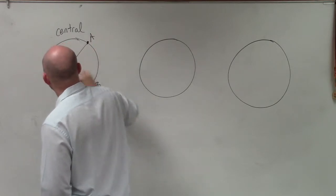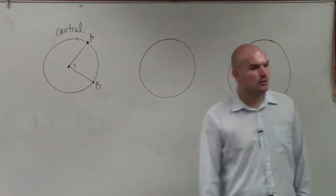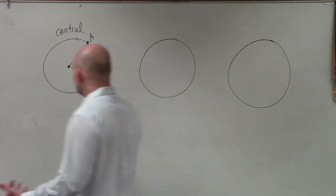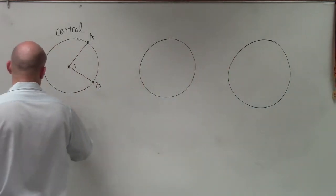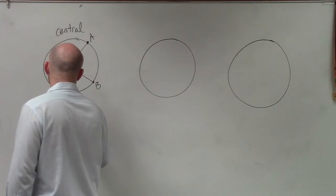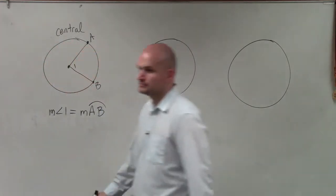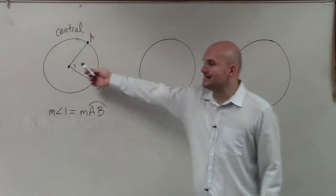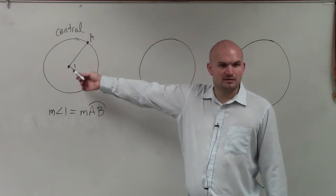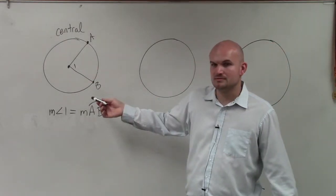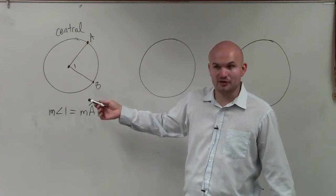And it had two end points that were on the circle, A B, and that would be our angle 1. Now, when we're talking about the central angle, the measurement of our angle, measure of angle 1, was equal to the measure of the arc. So if I say this is 60 degrees, then the arc is 60 degrees. It's the same.